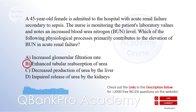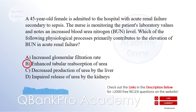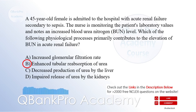Explanation: In acute renal failure, there is a decrease in glomerular filtration rate, GFR, leading to impaired excretion of urea. As a compensatory mechanism, the renal tubules reabsorb more urea, resulting in an elevated blood urea nitrogen, BUN, level.